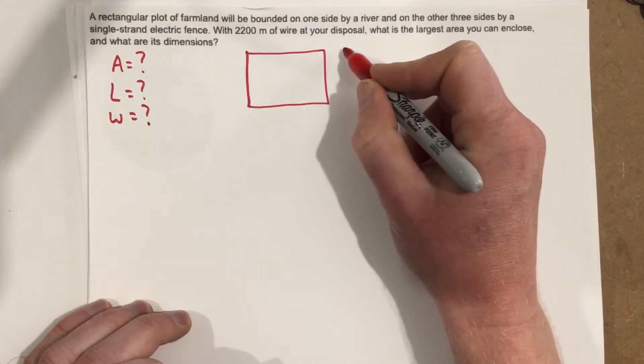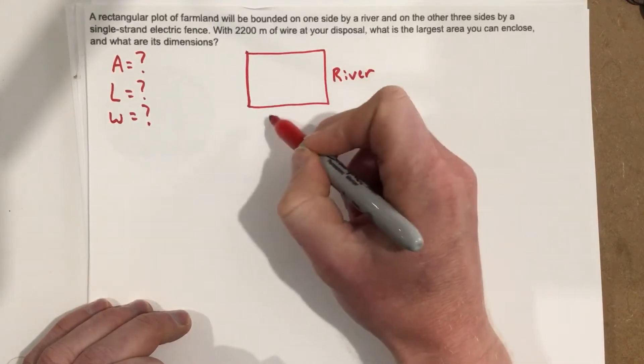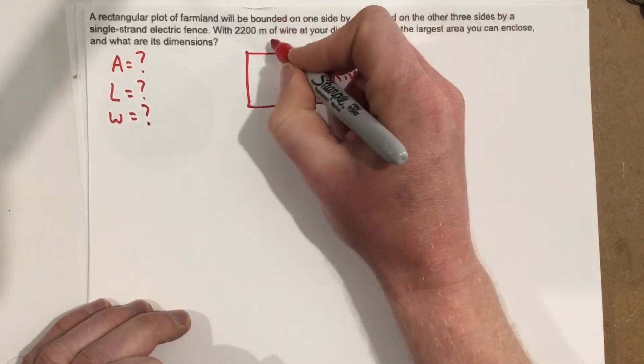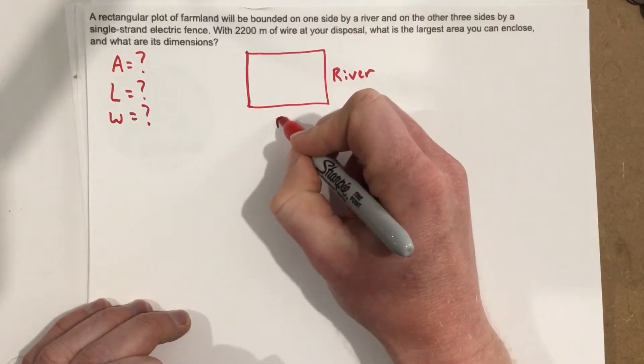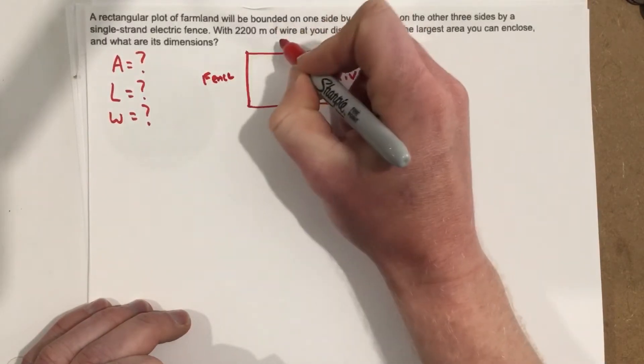On one side it's got a river, so I'm just going to label this the river side. And the rest is fencing, so we'll just say fence, fence, fence.